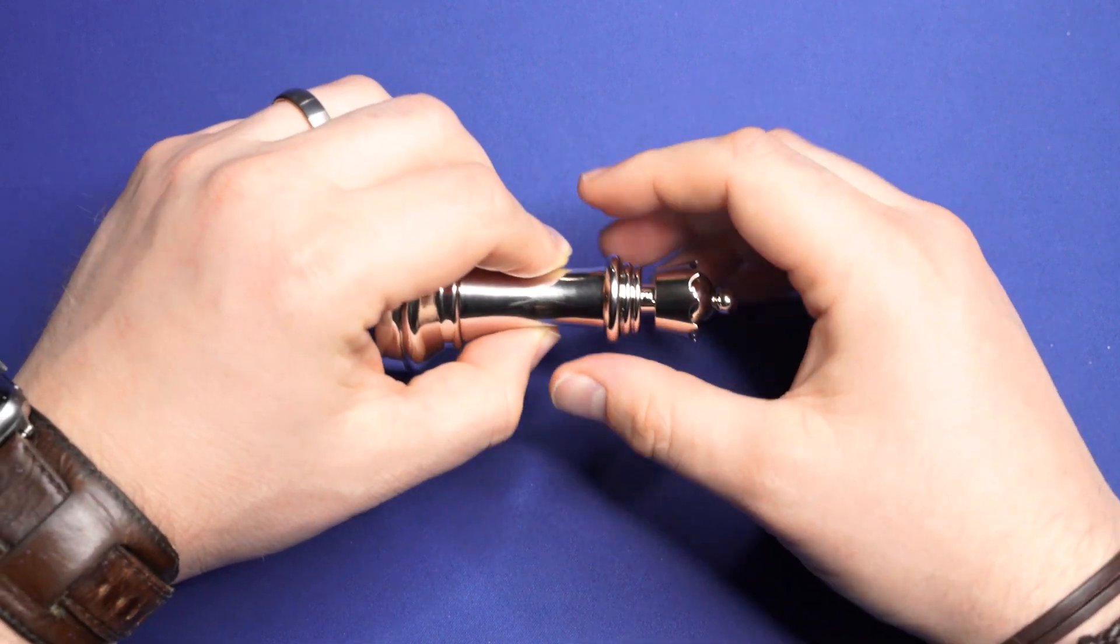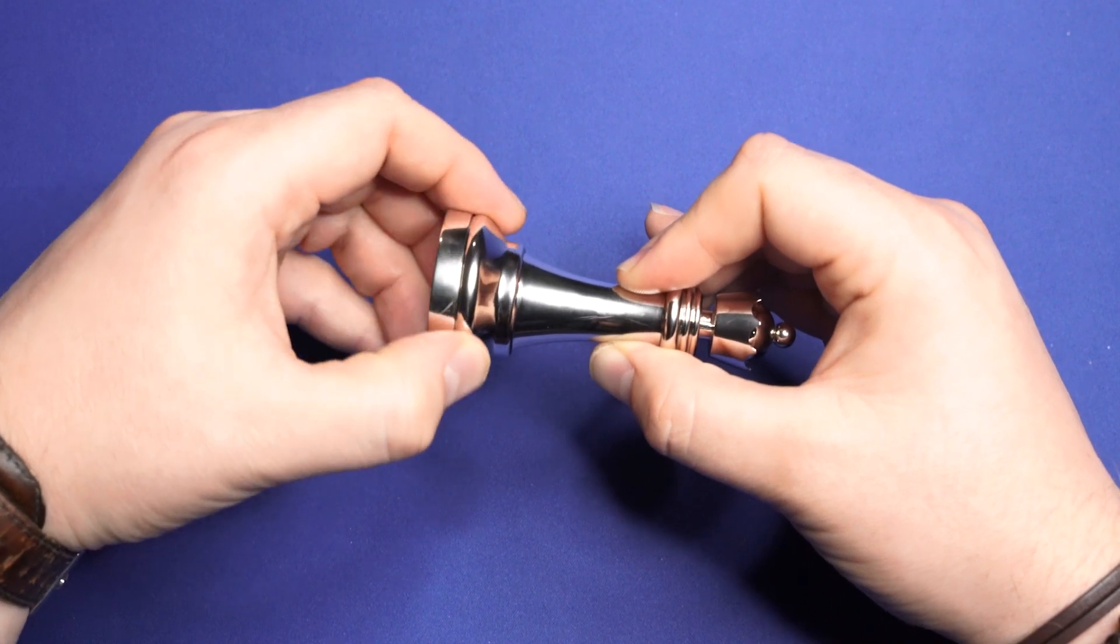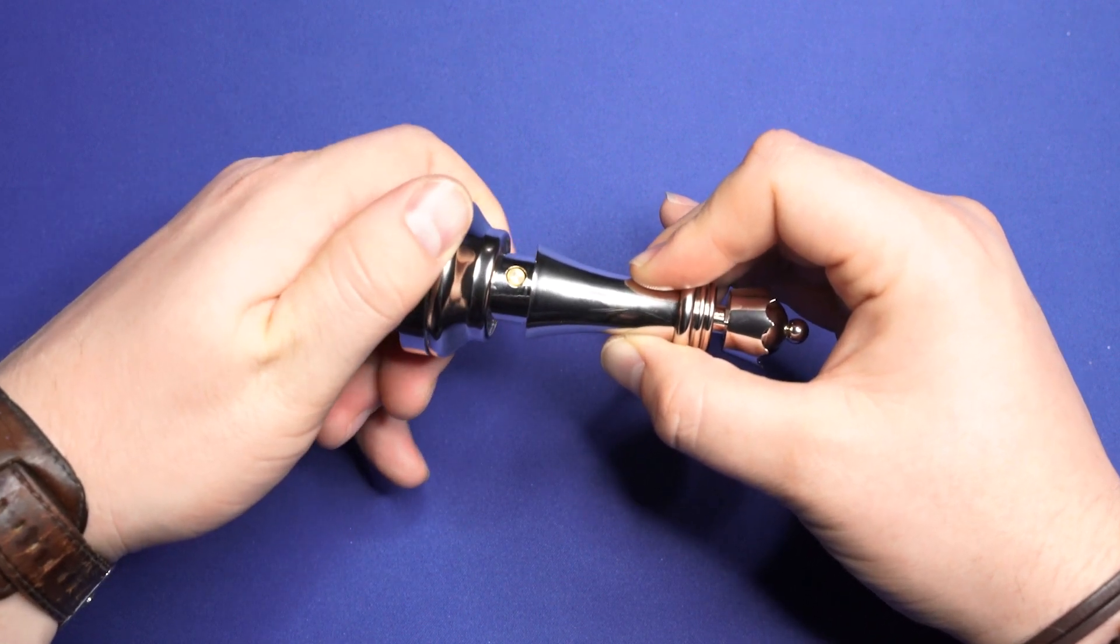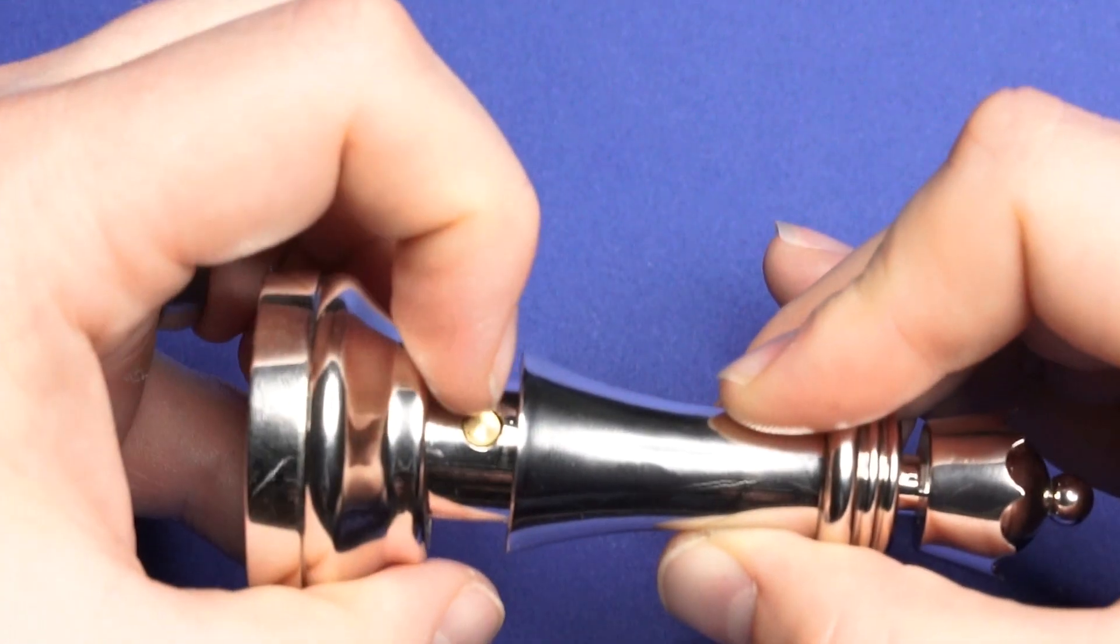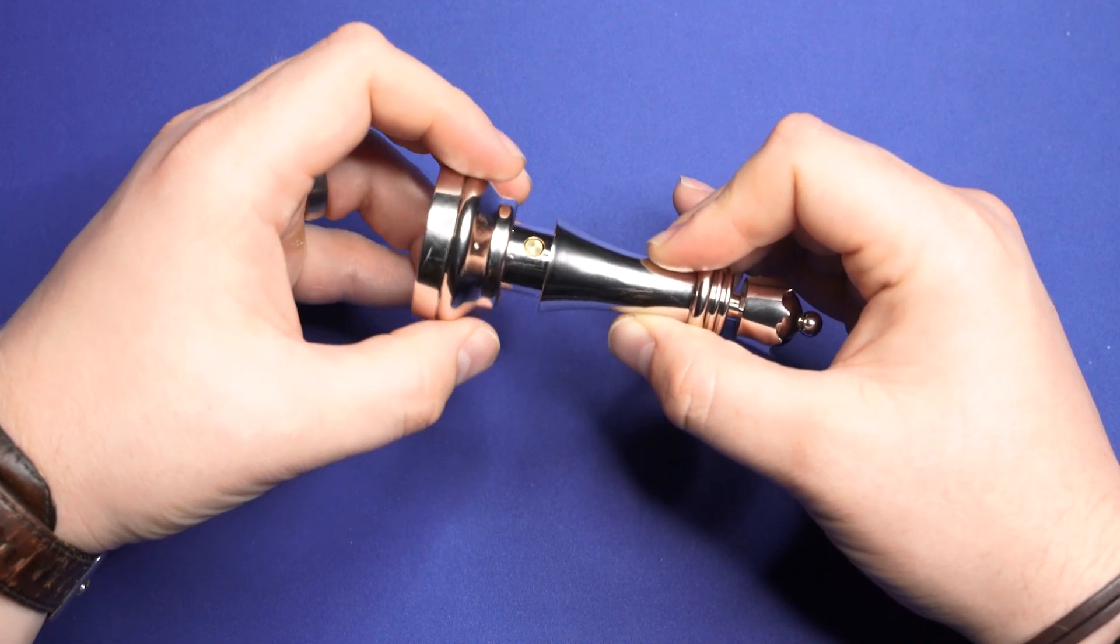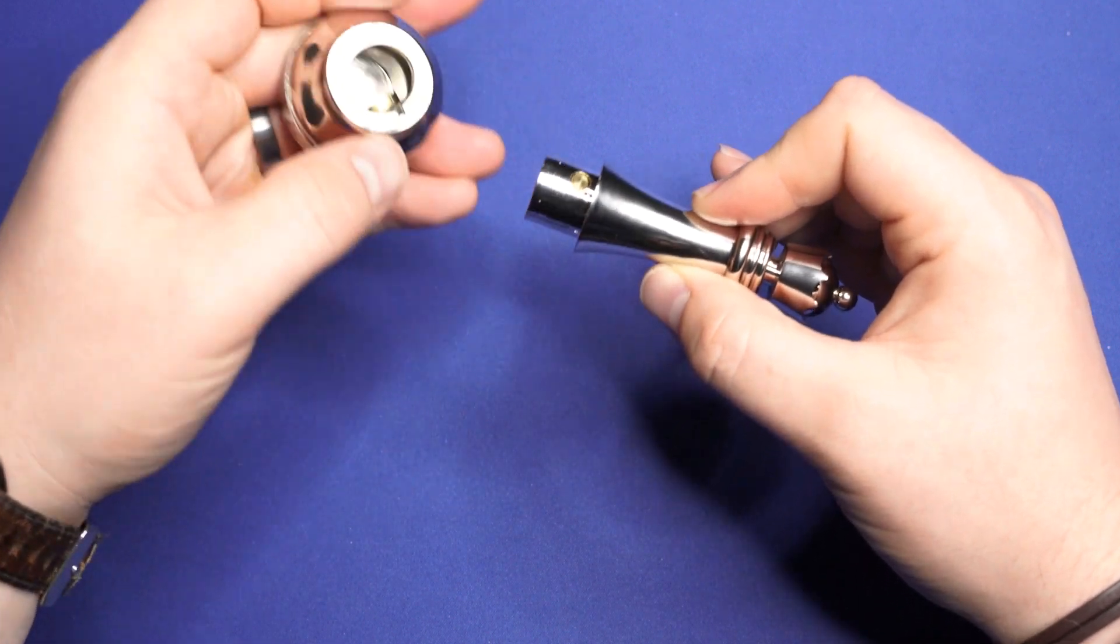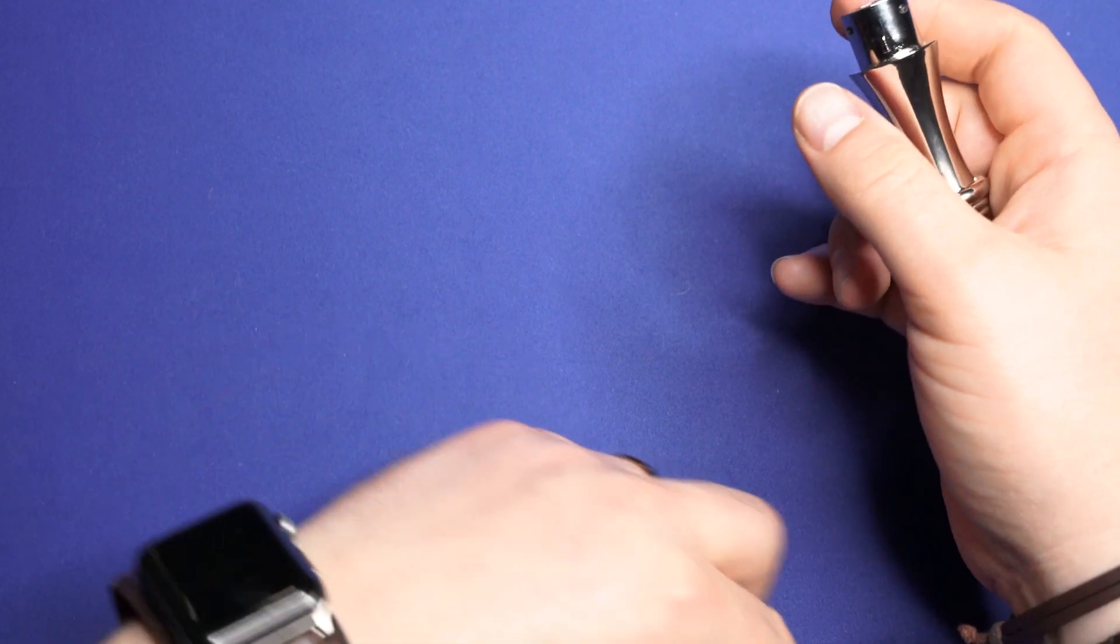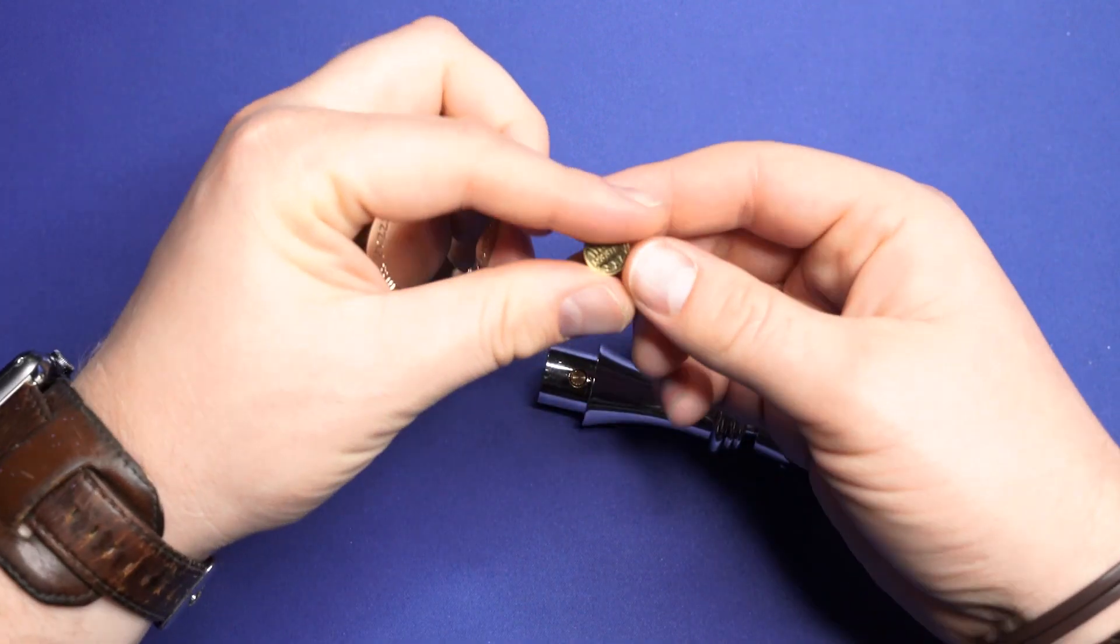Now, we take the bottom, we rotate it. Ha! And see this pin right here has fallen and has allowed us to open the bottom and retrieve our medallion.